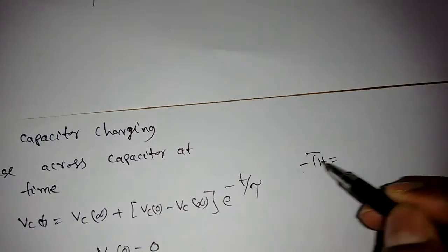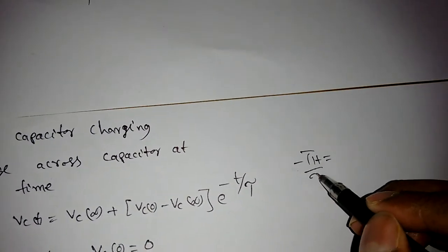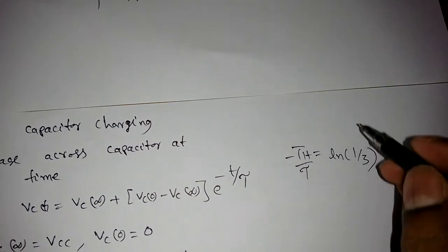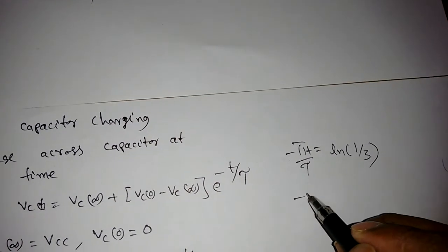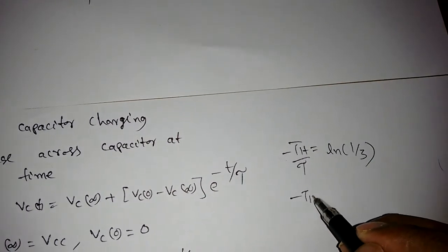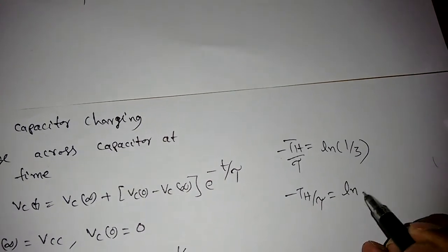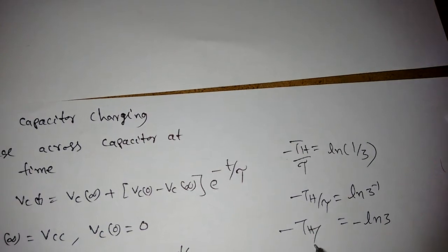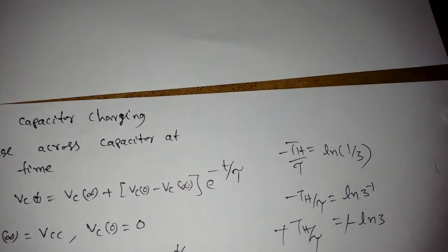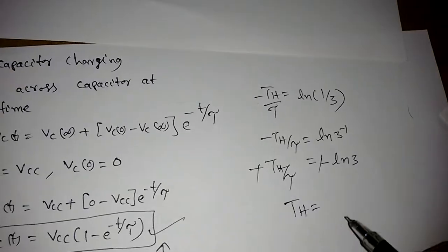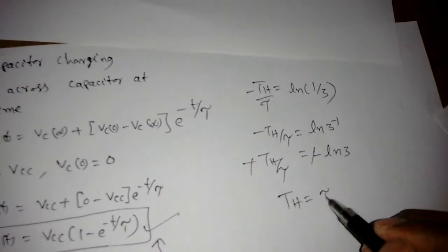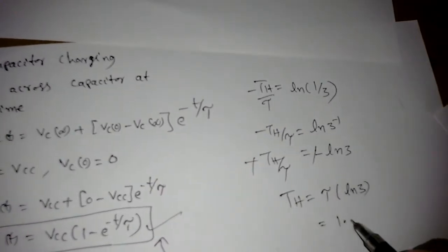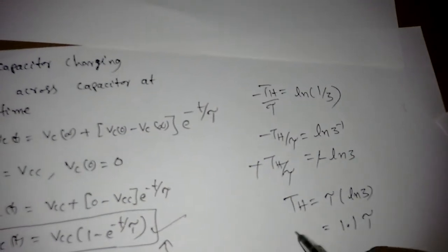The negatives cancel, so Th/τ = ln(1/3). Taking 3 to the numerator gives -Th/τ = ln(3^(-1)) = -ln(3). The negatives cancel again, yielding Th = τ · ln(3).